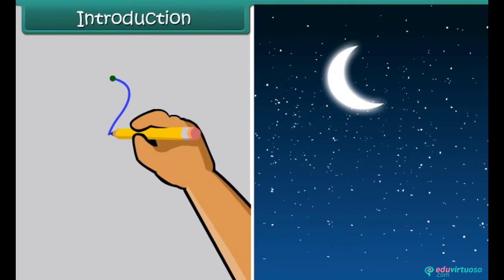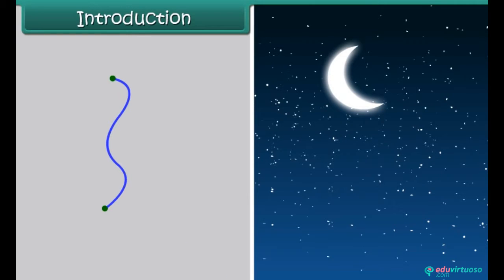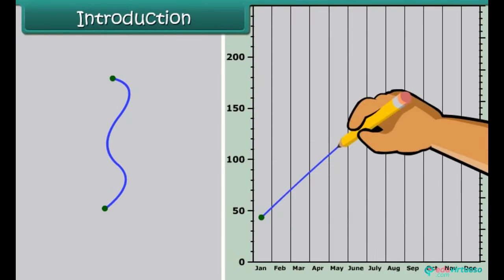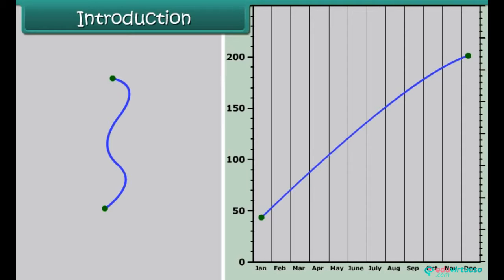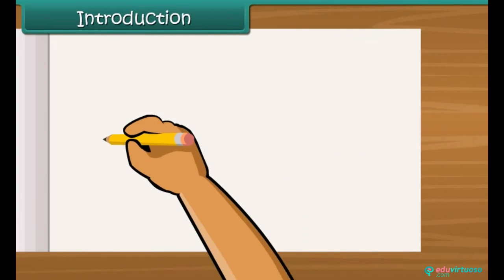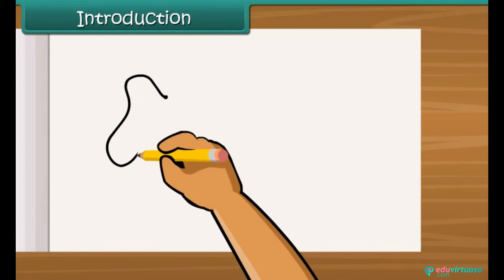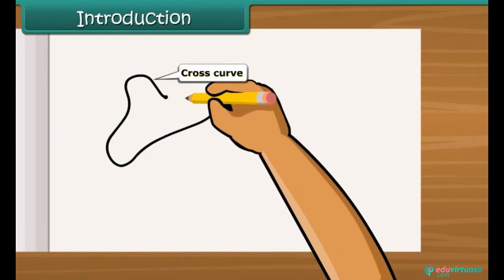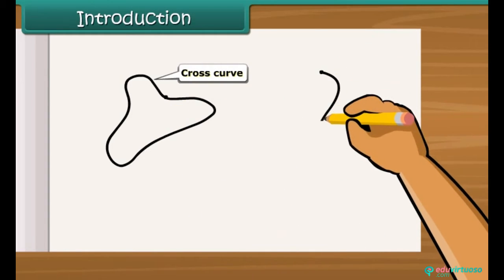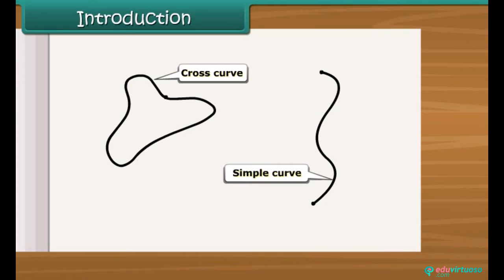A curve in everyday usage means not straight. In mathematics, a curve can be straight also. A curve can cross itself or may not cross itself. If a curve does not cross itself, then it is called a simple curve.